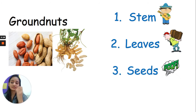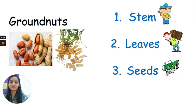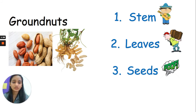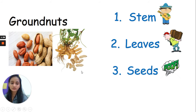The next food is groundnuts. Same actions: one for stem, two for leaves, three for seeds. I'm giving you five seconds to identify and categorize. One, two, three. If you disappeared from the screen, that's absolutely correct — they are the seeds of a plant. They grow underground along with the roots, but they are the seeds. Good job everyone!